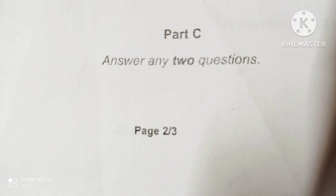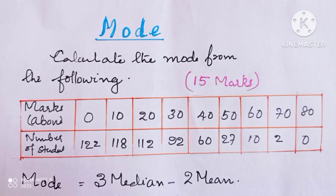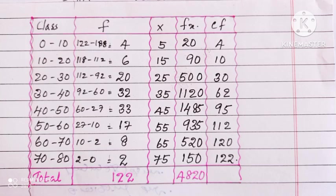From part C, we have to answer any two questions. There are four questions in total. Each question carries 15 marks. First question from part C is calculate the mode of the following. Marks above is given, number of students is given. That means the number of students who got more than 0 is 122 students.